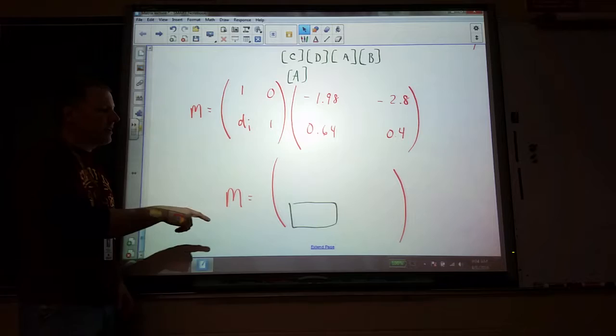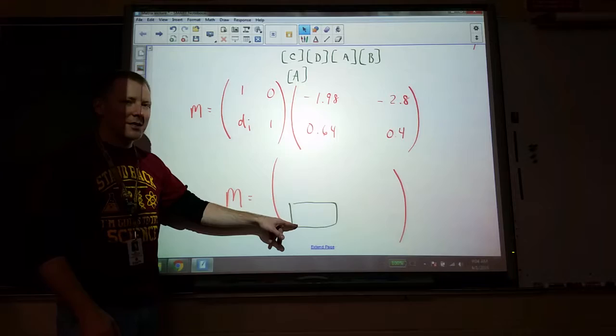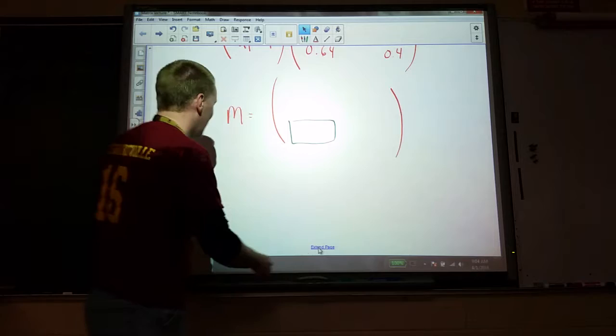When we're trying to find the solutions, the only two places in our total system matrix that we care about are the bottom row, because this one will let us figure out the image distance, and then we can use that image distance to figure out the magnification.